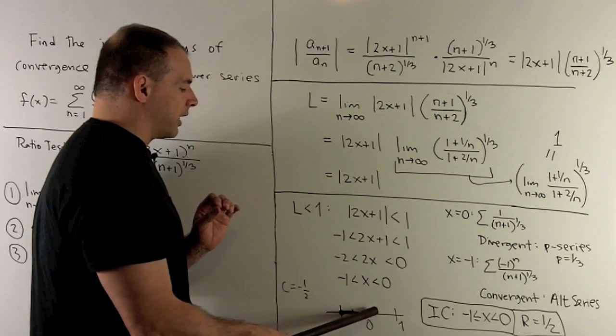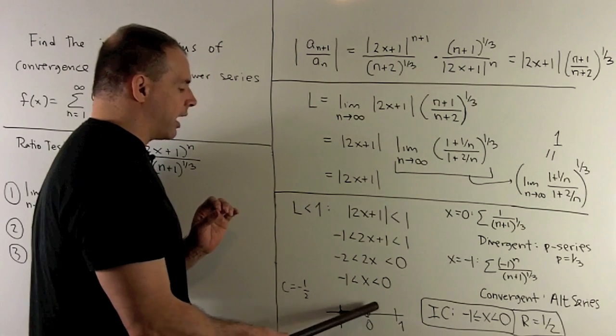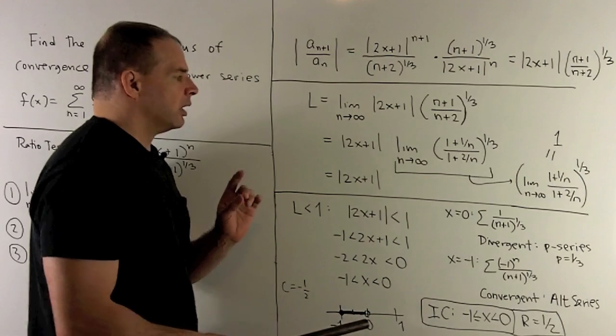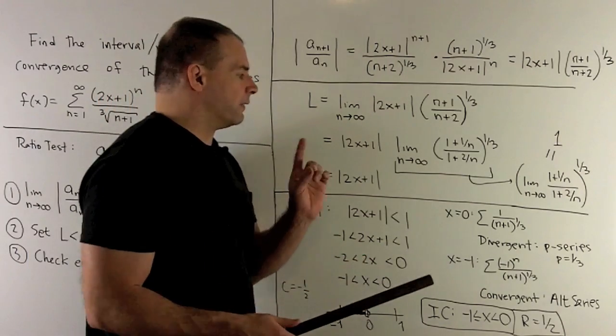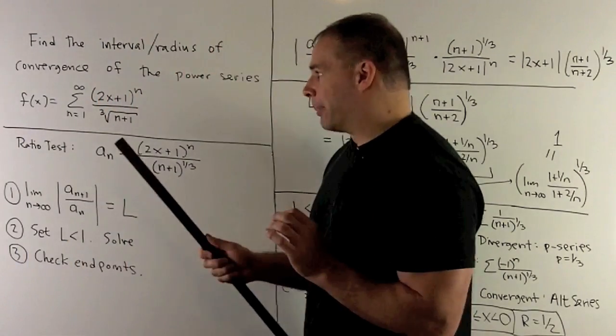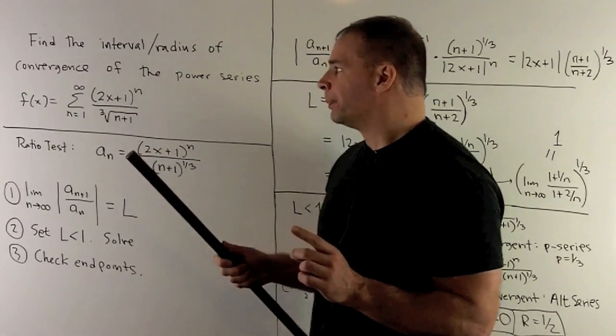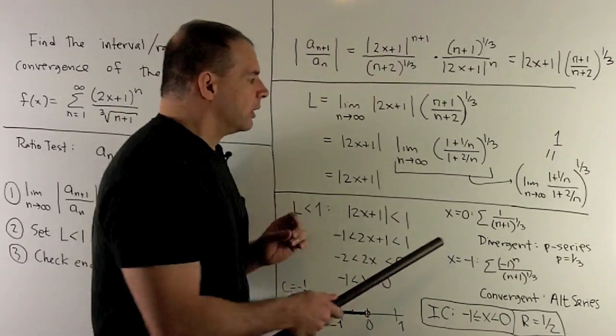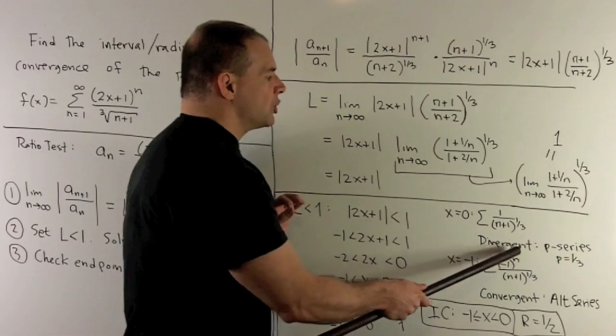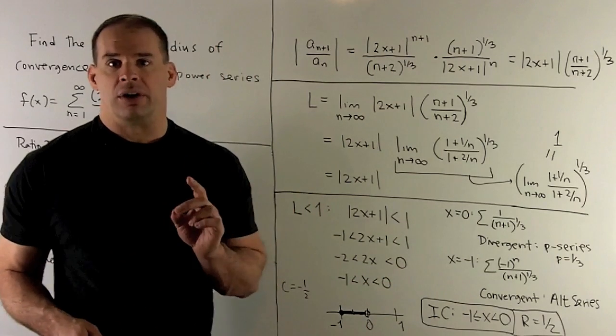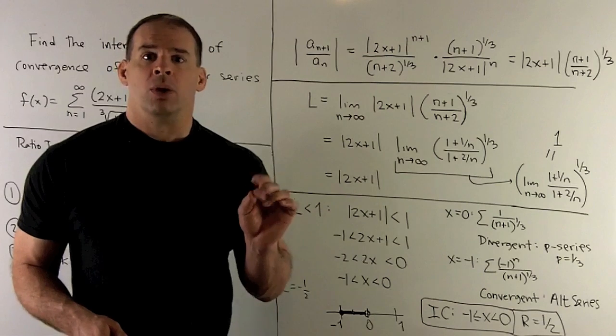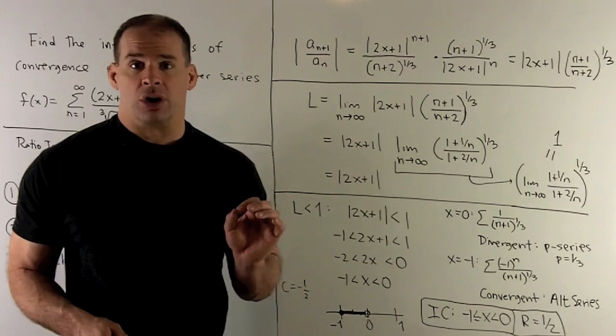We'll mark that off, and then we'll do the endpoints. If we put 0 into our original function, we're just going to have 1 to the nth power, which is going to turn to a 1. This series here is going to diverge if we compare with a p-series. There we'll have p equal to 1/3, which is less than 1, so it's going to diverge.